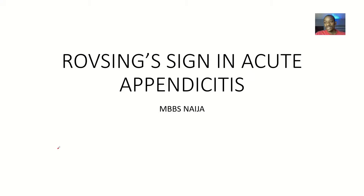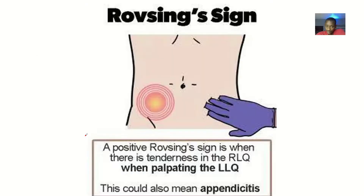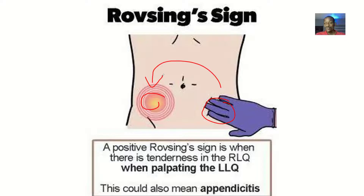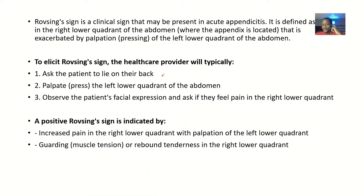Apart from the obturator sign and the psoas sign, there's yet another sign that could be seen in acute appendicitis, and that is the Rovsing sign. The Rovsing sign is simply this: you have pain on the right, but instead of palpating the right, you palpate the left, and when you palpate the left the patient still feels referred pain on the right. That is the Rovsing sign, seen in patients with acute appendicitis.